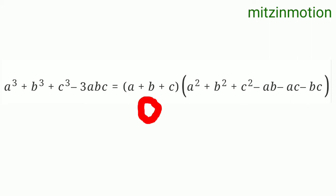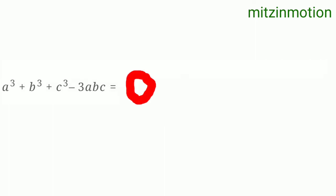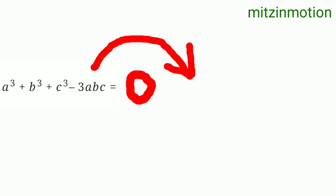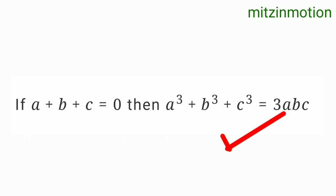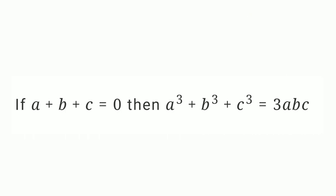Now, instead of (a + b + c), if I put 0 — you understood? If a + b + c = 0, then 0 will be multiplied with this, and the right-hand side becomes 0. Shifting -3abc to the right-hand side gives +3abc. So if a + b + c = 0, then a³ + b³ + c³ = 3abc. This is a new formula derived directly from the previous one. You have to learn this formula.